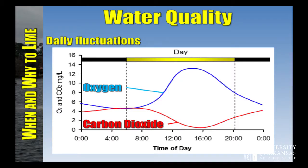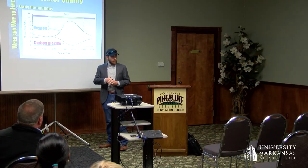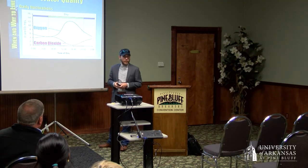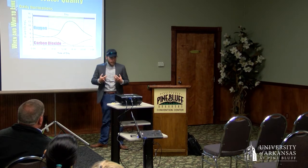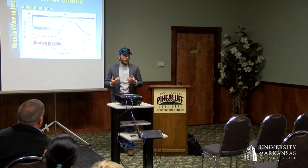This chart explains why alkalinity is important. In ponds you're dealing with dissolved gases constantly — one of the big ones is carbon dioxide, a weak acid whose concentration changes during the day based on the metabolic activity of plankton, plants, and animals. In a 24-hour period you'll have fluctuations of both oxygen and CO2. Since CO2 is a weak acid, whenever it goes up or down, pH does the opposite — basically the inverse of CO2 is what pH will be doing.